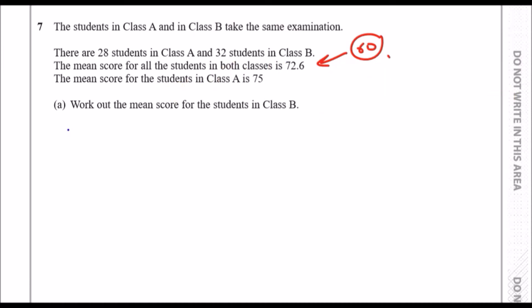This is something known as the weighted mean. Think of it like this: we've got 28 students in class A, and on average they each scored about 75 marks, plus 32 students in class B who scored a mean of B. If you combine the two results, 60 students should have got a mean of 72.6. This makes sense because you're counting 75 times 28 marks and B times 32, and altogether there's 60 students.